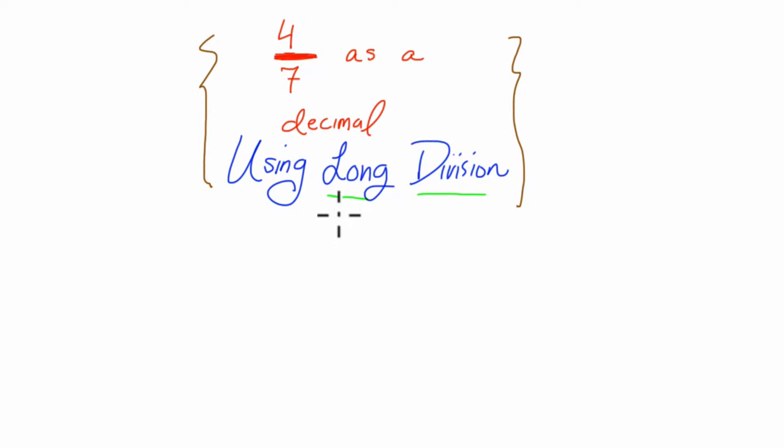All right, so here we're converting 4 sevenths as a decimal using long division, which means we're taking the numerator, 4, and dividing it by 7, the denominator.